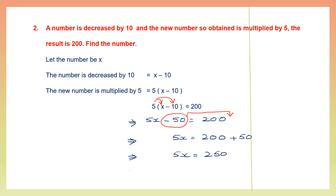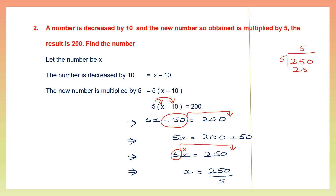5x is equal to 250. We can find the value of x by transposing the 5 — it is multiplication here, so when it goes to the right side it becomes division. 250 divided by 5: 5 fives are 25, bring down the 0, so we get 50. So x is equal to 50, and the number we were asked to find is 50.